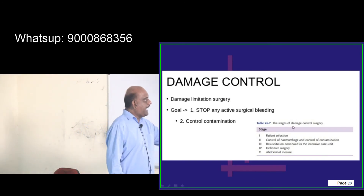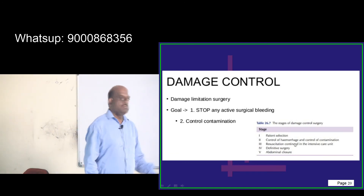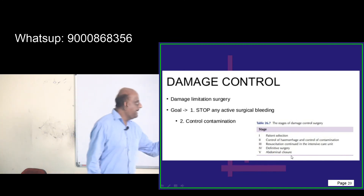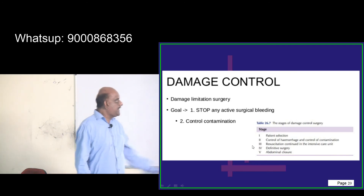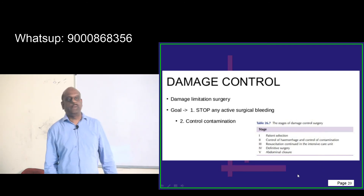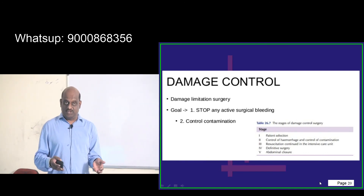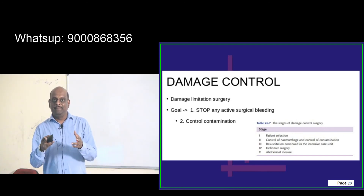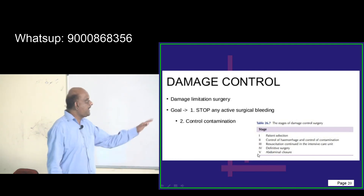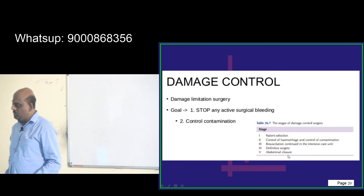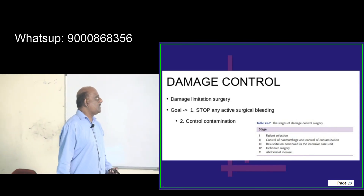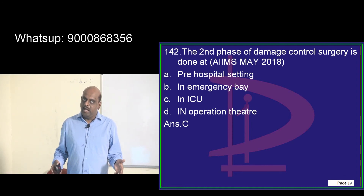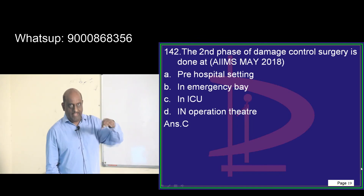In damage control surgery: Phase 1 — patient selection. Phase 2 — control hemorrhage and control contamination. Phase 3 — resuscitation in the ICU, continuing what was started in Phase 2. Phase 4 — definitive surgery. Phase 5 — abdominal closure. So the second phase involves controlling contamination and controlling bleeding, and the resuscitation continues in the ICU.